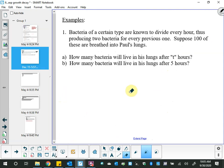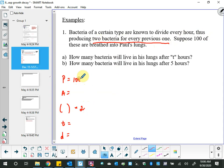So here is our first two questions. They're a bit funky for this, but still, I am going to make my list. It says bacteria of a certain type are known to divide every hour, thus producing two bacteria for every previous one. That is a wordy way of saying that in this bracket, you're going to put a two because it's doubling. Then it says, suppose a hundred of these are breathed into Paul's lungs. So that's the beginning amount.